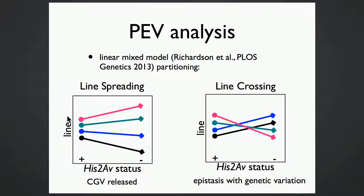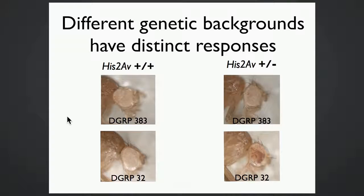To analyze position effect variegation, we use a linear mixed model developed by a previous grad student in the lab. This model takes the variance from line-by-genotype interactions and partitions it into line spreading and line crossing components. Line spreading measures how much cryptic genetic variation is revealed. Since we're still collecting data, we don't have the full analysis yet, but what we have is promising: different genetic backgrounds show very distinct responses when we knock out His2AV.